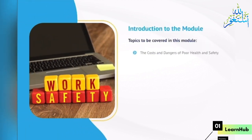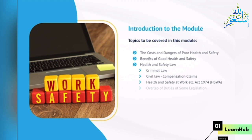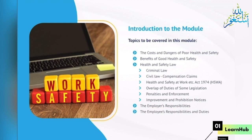Topics to be covered in this module: The Costs and Dangers of Poor Health and Safety; Benefits of Good Health and Safety; Health and Safety Law; Criminal Law; Civil Law; Compensation Claims; Health and Safety at Work etc. Act 1974; HSWA Overlap of Duties; Penalties and Enforcement; Improvement and Prohibition Notices; The Employer's Responsibilities; and The Employee's Responsibilities and Duties.